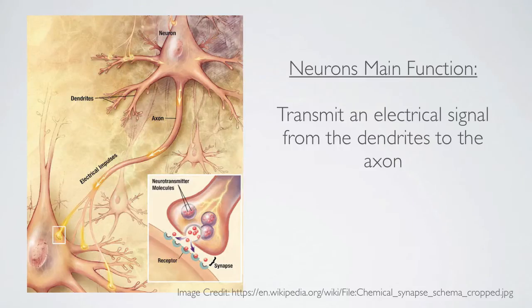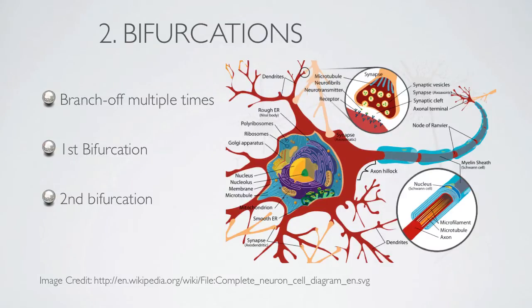If we zoom in a little closer, we can see that the dendrites branch off multiple times. Every point where one dendrite branches into two segments is called a bifurcation. It's possible to count the bifurcations — the first time one dendrite branches into two segments is called the first bifurcation, and the second time it branches off is called the second bifurcation.